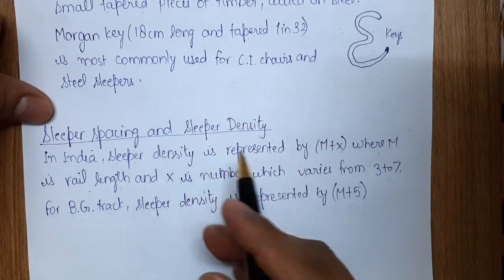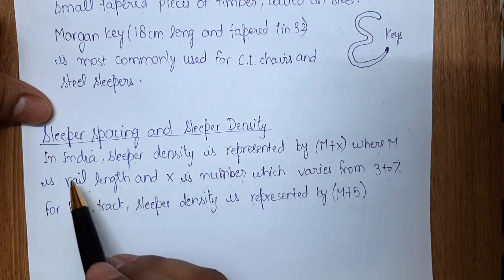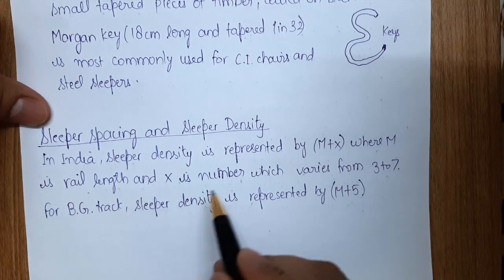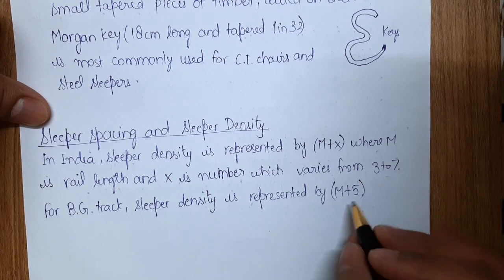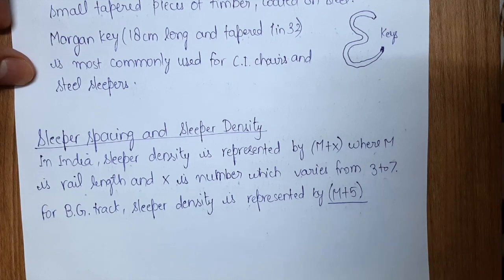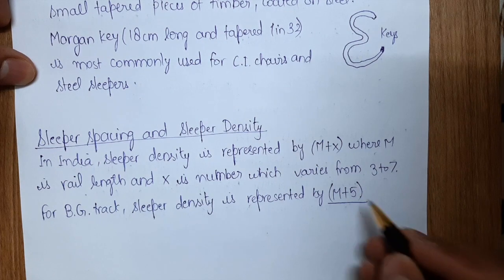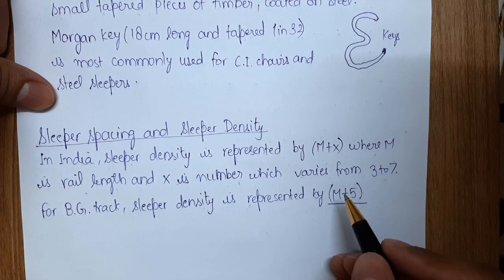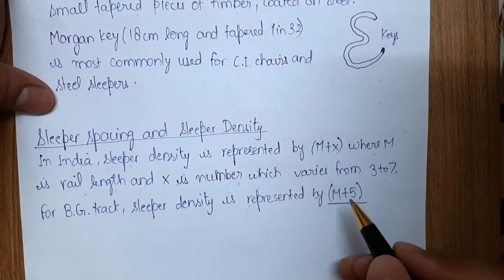Sleeper density in India is represented by m+x, where m is the rail length and x varies from 3 to 7. For broad gauge track, sleeper density is represented by m+5. For example, if the rail length is 13 m, the sleeper density for broad gauge is 13+5 = 18, giving approximately 1-point-something sleepers per meter.